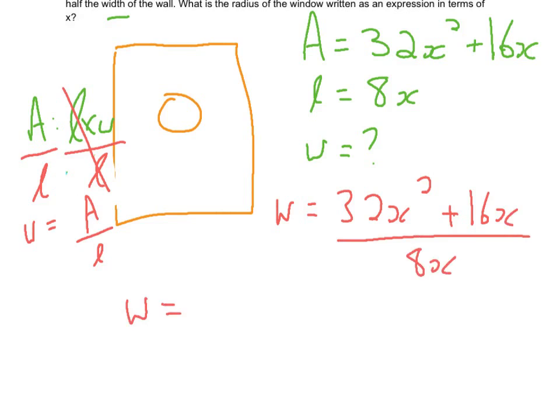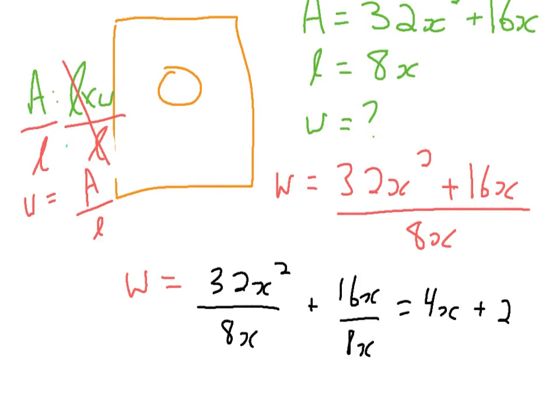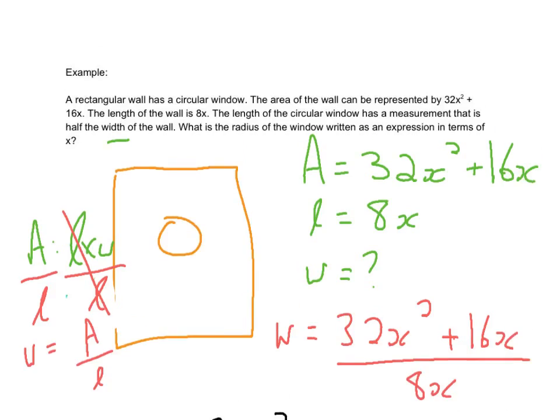So this is a division of a polynomial by a monomial. So we do each one separate. 32x squared divided by 8x, and that's going to be plus 16x divided by 8x. So 32 divided by 8 is 4. x squared divided by x is x. Plus 16 divided by 8 is 2. x divided by x cancels out. So the width is going to be 4x plus 2.